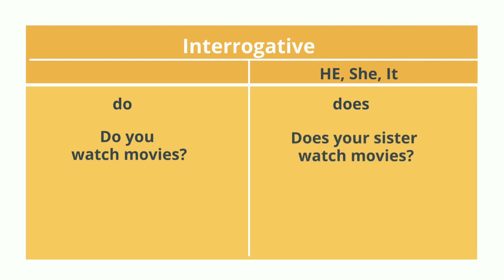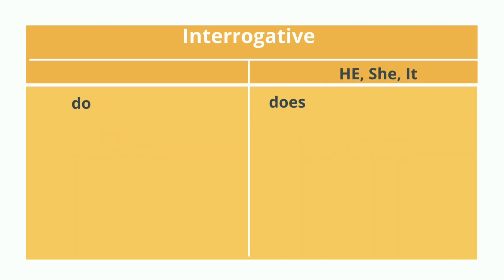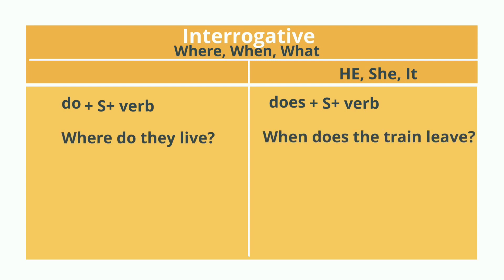Questions that start with where, when, or what are followed by do or does, subject, and then the verb. Where do they live? When does the train leave? When do you travel? Where does he work?